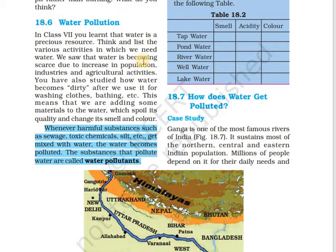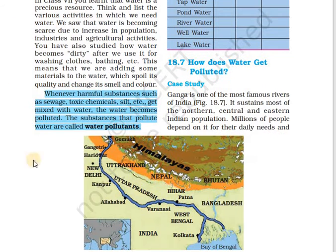Now we will move to water pollution. What is water pollution? Whenever harmful substances such as sewage, toxic chemicals, silt etc. get mixed with water, the water becomes polluted. Substances that pollute the water are known as water pollutants. In this session, a case study of River Ganga is given. River Ganga is considered one of the sacred rivers of India and it extends from the Himalayas till the Bay of Bengal in the east.